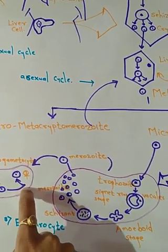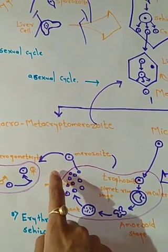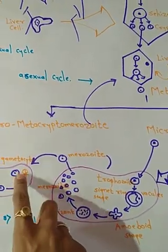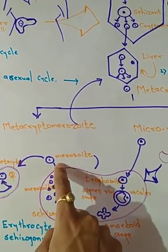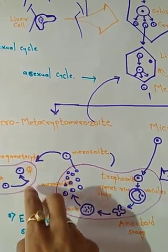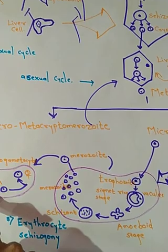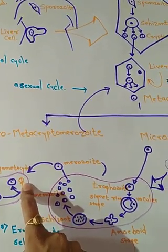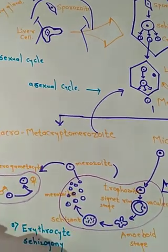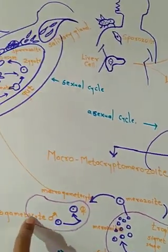The sexual reproduction starts here. Merozoites produce two types of gametocytes: the macrogametocyte, which is the female gamete, and the microgametocyte, which is the male gamete.